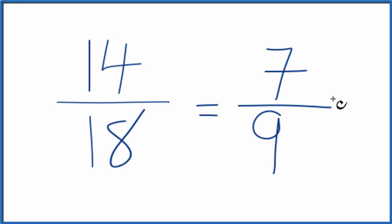So in answer to our question, when we simplify the fraction 14 eighteenths, we end up with 7 ninths, and you just can't reduce that any further, it's in lowest terms.